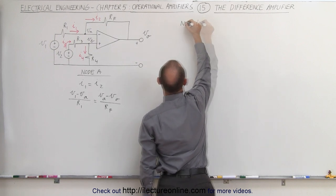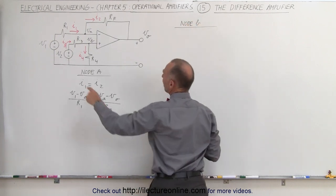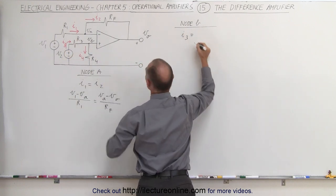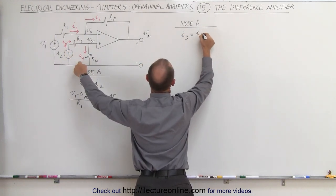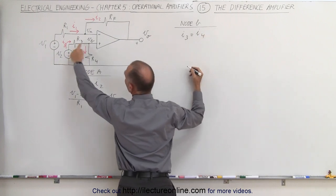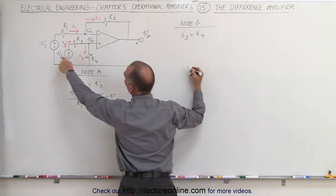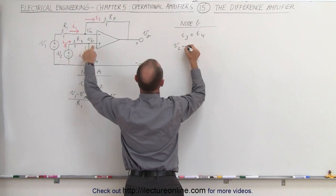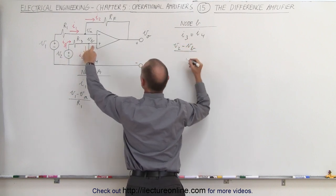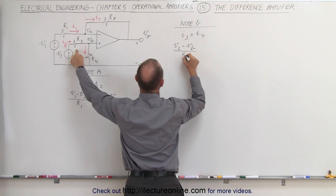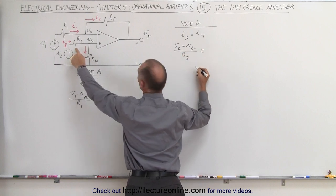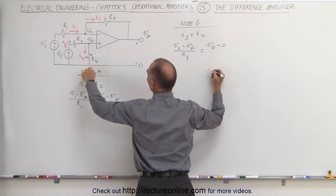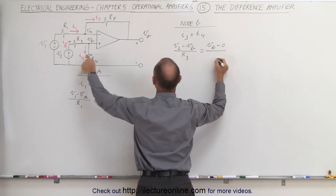When we go to node B we end up with the following equation: I3 going in equals I4 leaving. I3 going into node B is V2 minus the voltage at B divided by R3, and setting that equal to I4, which is VB minus 0, at ground, divided by R4.